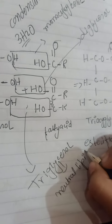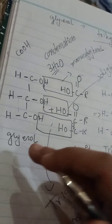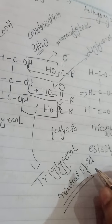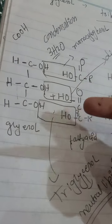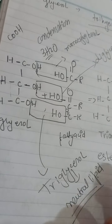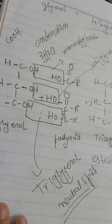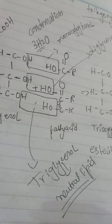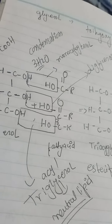Triglycerol is also called the neutral lipid. Why? Because all three fatty acids have made a bond with the glycerol — there is no hydroxyl group left free. They all have bonded with the glycerol. That's why it is called the neutral lipid. That was the formation of the triacylglycerol.